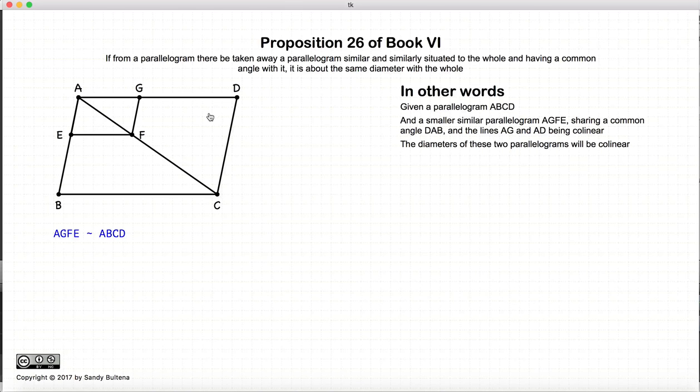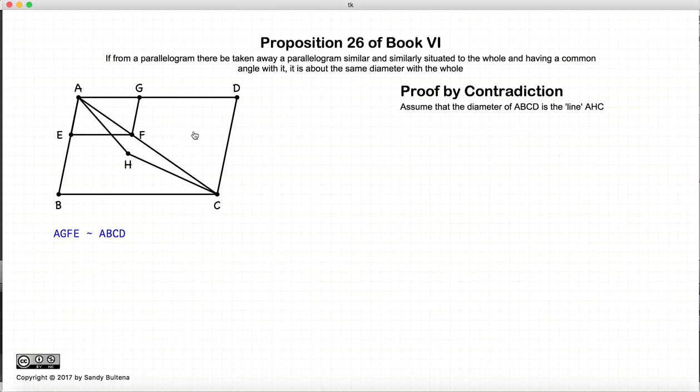Now we're going to prove this by assuming that this condition is not true. So let us assume that the diameter of ABCD is actually this line AHC and with a little bit of imagination let's assume that this AHC is actually a straight line.